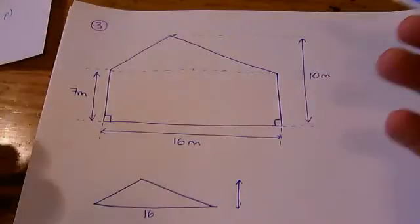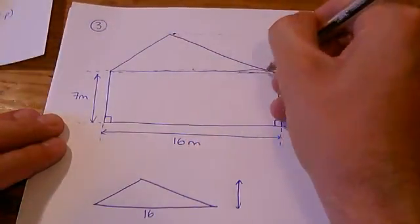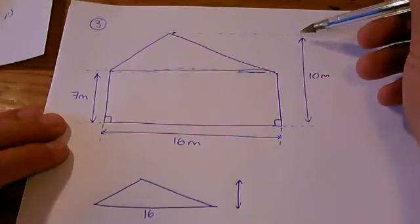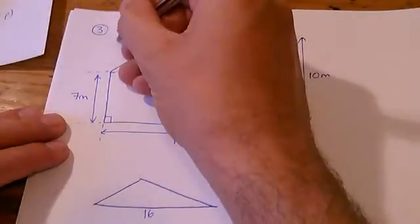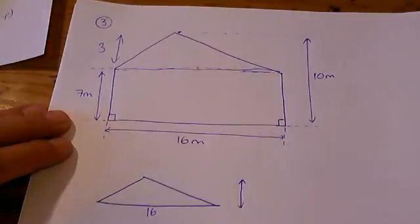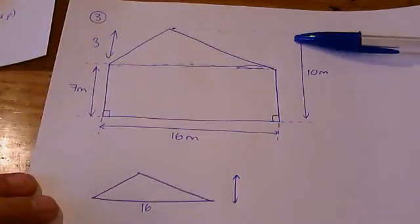If you imagine that this was a house, this might be where your guttering was, 7 meters above the ground. And then the very top of the roof is 10 meters above the ground. That means that the roof has a height of 3 meters because the 7 and the 3 have to total up to make the 10.